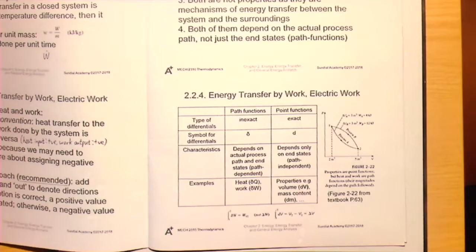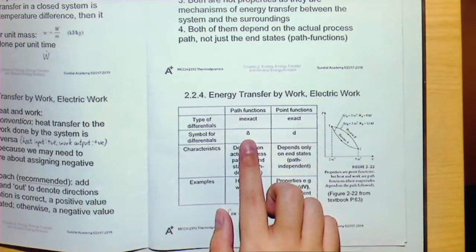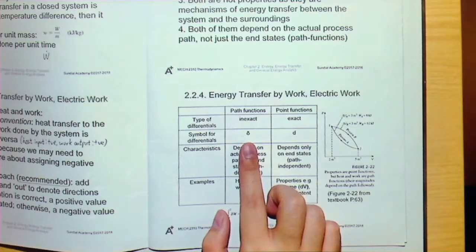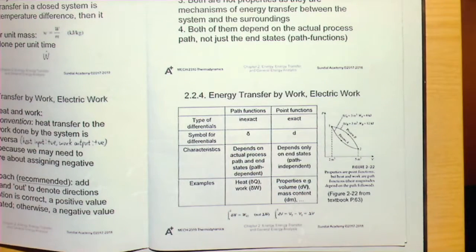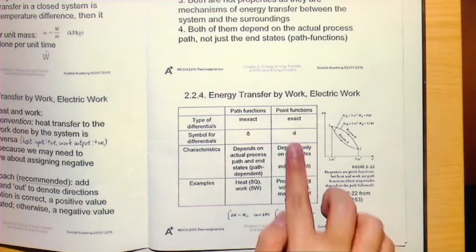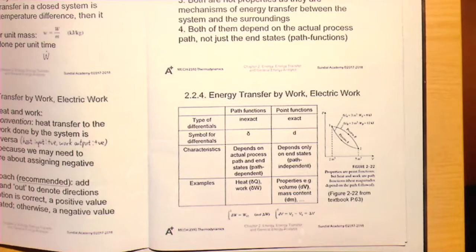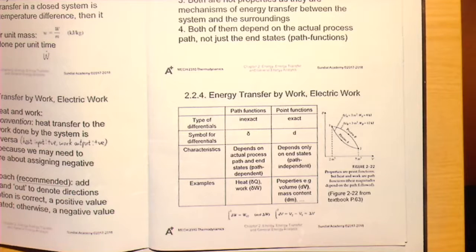The symbol for the differential of a path function is delta (δ), while for a point function we use the ordinary d. Path functions are path-dependent — they depend on the actual process path as well as the end states. Point functions are path-independent — they depend on the end state only.